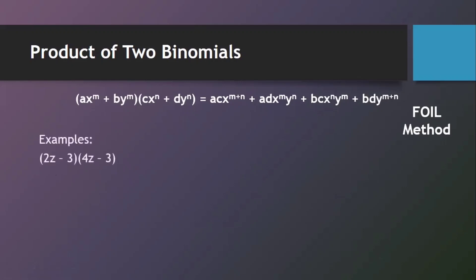Let's have the first example: (2Z minus 3) multiplied by (4Z minus 3). Applying the FOIL method, the first terms are 2Z and 4Z, giving us 8Z squared. The outer term is 2Z multiplied by negative 3, giving negative 6Z. The inner term is negative 3 multiplied by 4Z, giving negative 12Z. And the last terms: negative 3 multiplied by negative 3 gives positive 9.